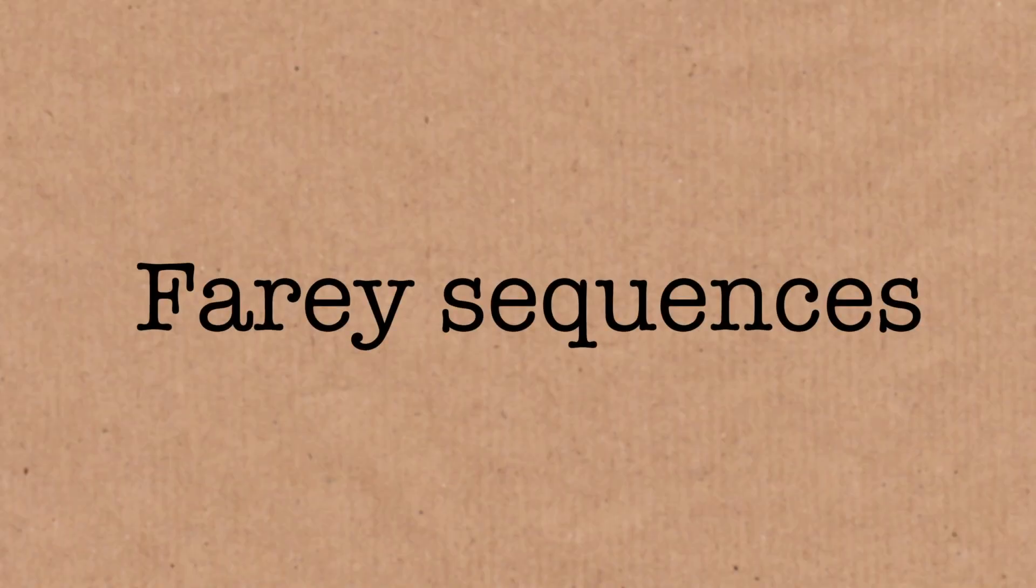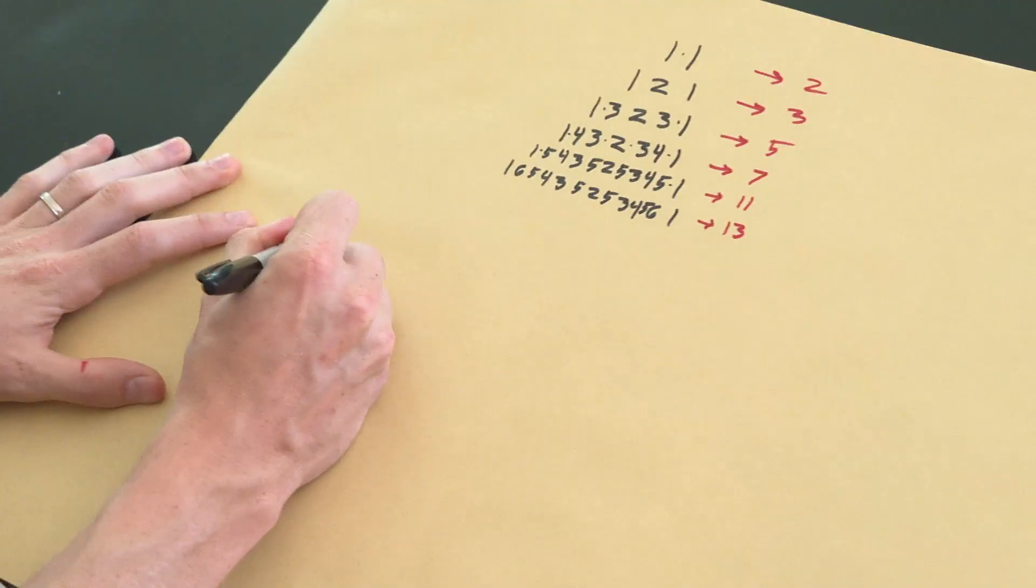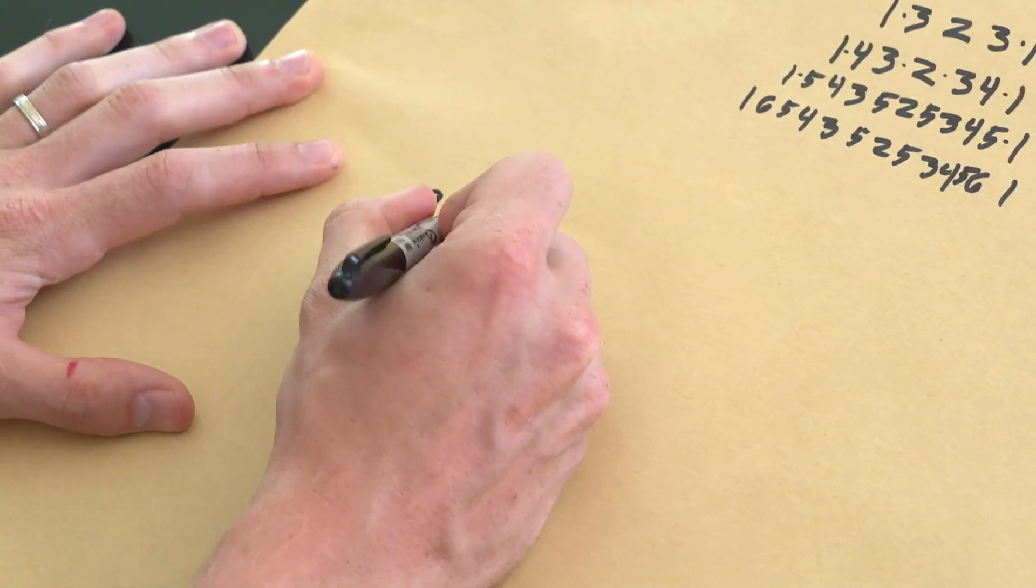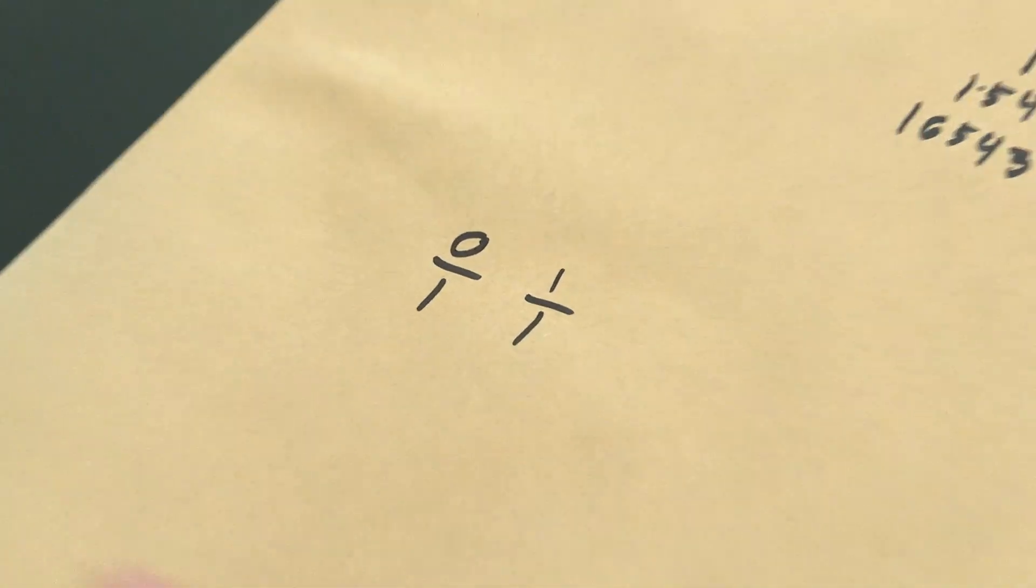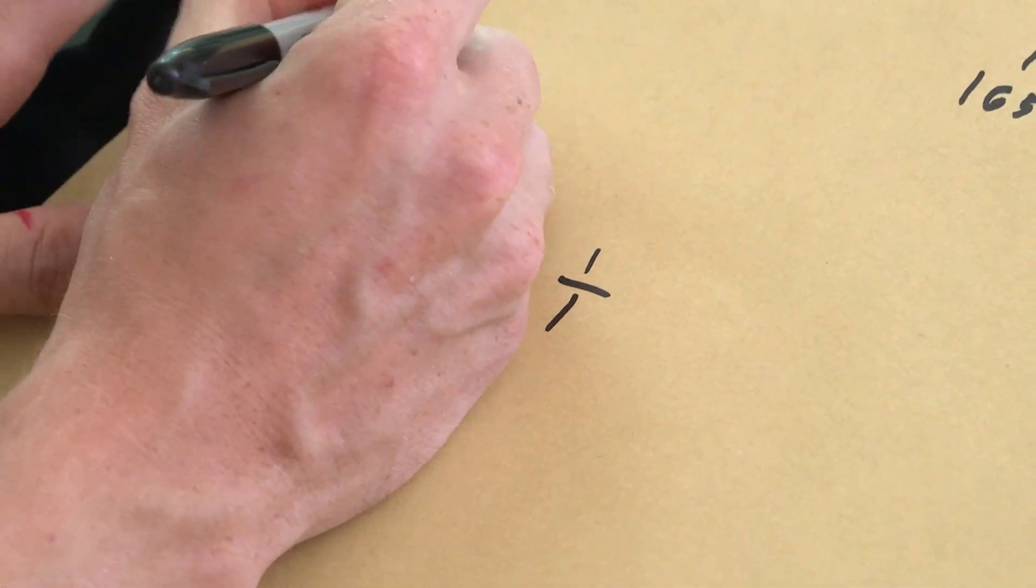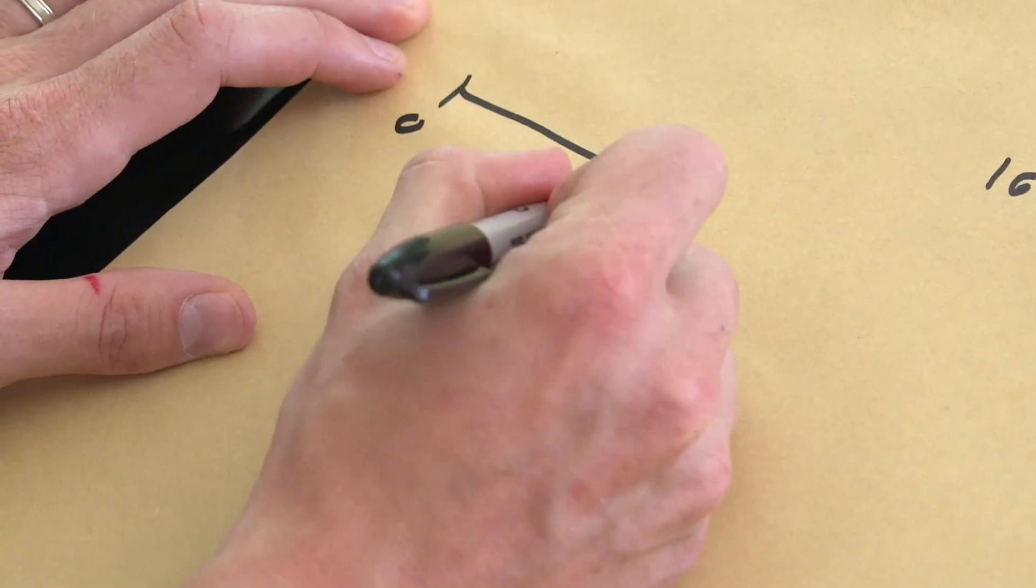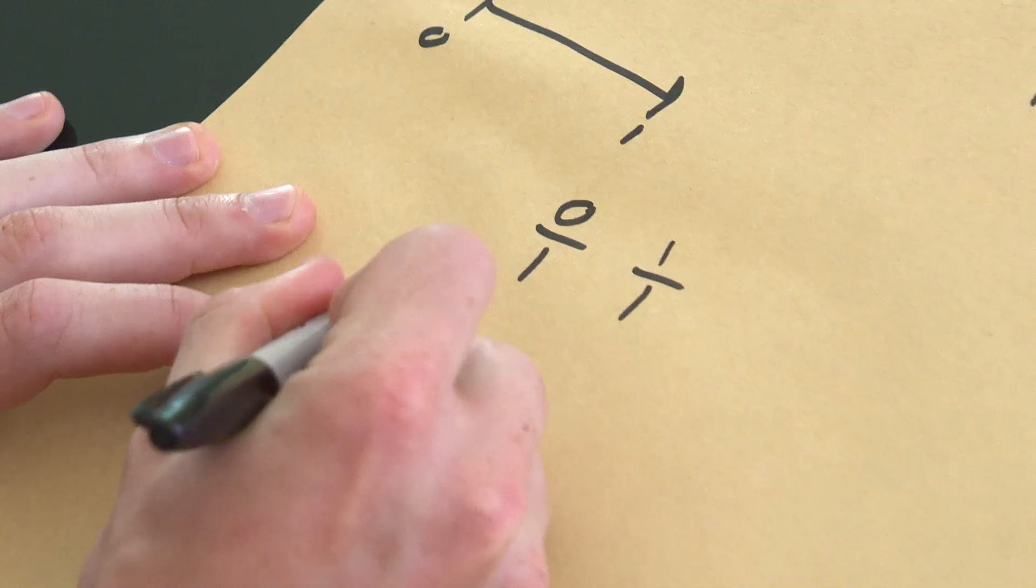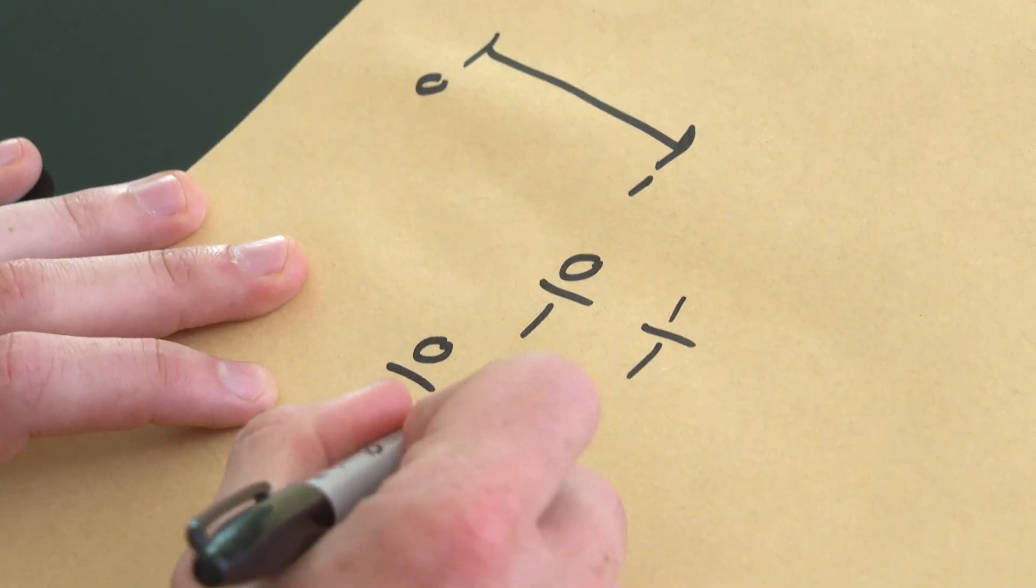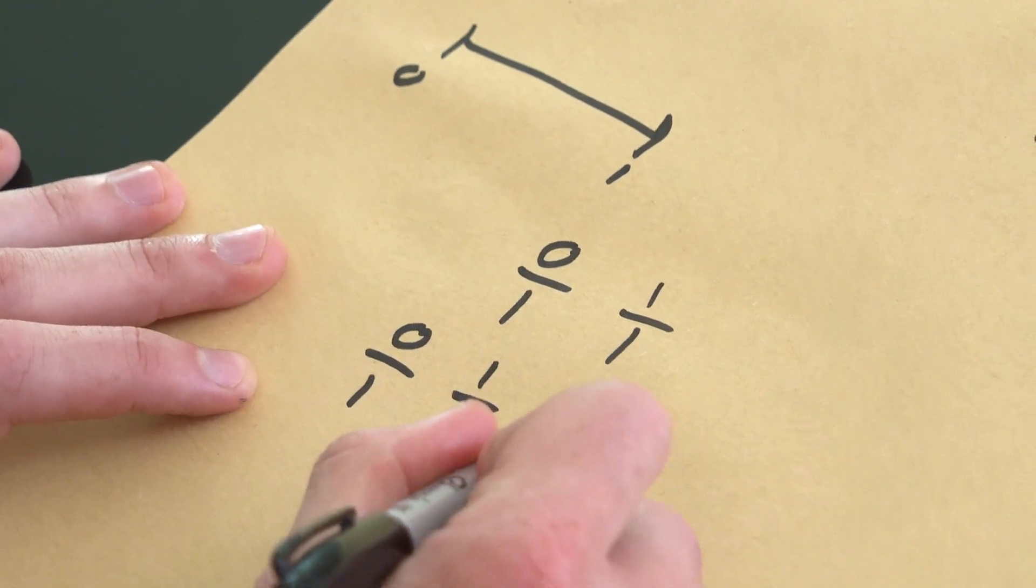It's related to these things called Farey sequences, where if I want to write out what are all of the rational numbers where the biggest possible denominator is 1 that sits somewhere in the interval from 0 to 1? There's really only two rational numbers available. I can have 0, which I could write a 0 over 1, or 1, which is 1 over 1. And if I say, okay, what are all the rational numbers in that interval, the unit interval from 0 up to 1, with a denominator that is at most 2? I've got those 2 that I already had, but I now could also include 1 half into those.